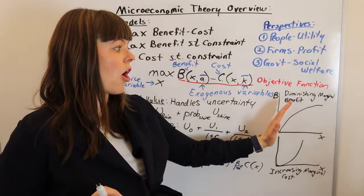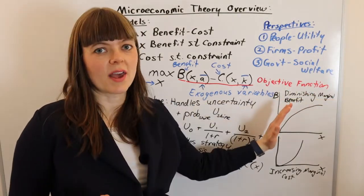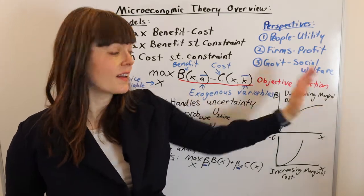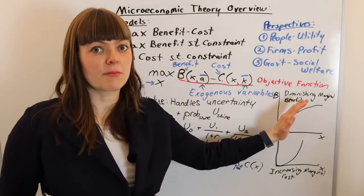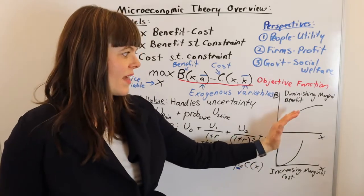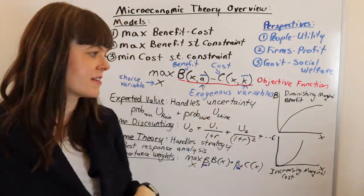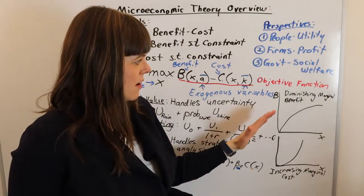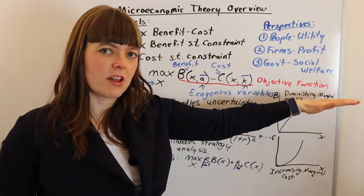Benefits often have the property that they're diminishing at the margin. We have diminishing marginal utility—utility is a benefit. Diminishing marginal product, where product is the output of the firm and that's going to be part of the benefit, part of the revenue function. Lots of things diminish at the margin.